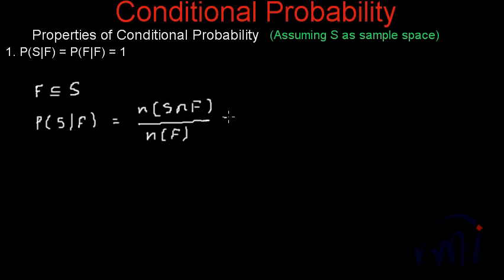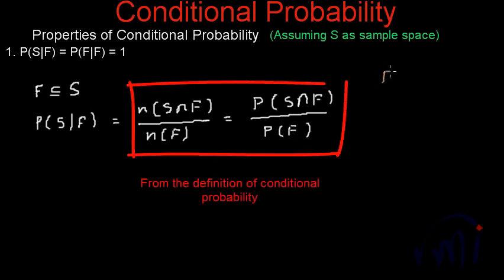Or it is also written as probability of S intersection F divided by the probability of F. Now, since F is a subset of S...